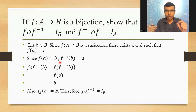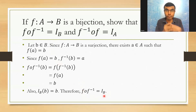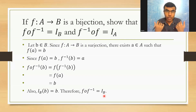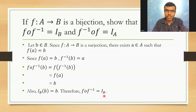F∘F⁻¹ and I_B are both mapping any element b to the same element b. They are defined on the same domain and co-domain, and for every element the mapping is identical. Therefore we can safely conclude that these two functions are the same, i.e., F∘F⁻¹ = I_B.